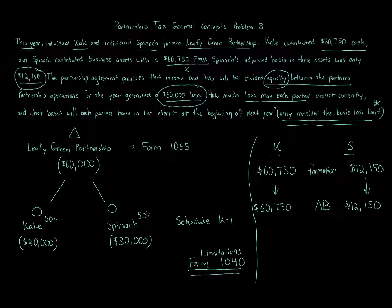Each partner is allocated a $30,000 loss. The question is whether each has enough basis to absorb it. For Kale, we need at least $30,000 of basis. Kale has $60,750 — yes, there's enough. So all $30,000 of loss can be reported on Kale's Form 1040, assuming the other loss limitations are met, but we're not worrying about those in this problem.